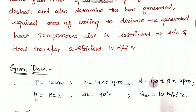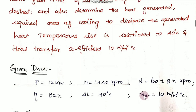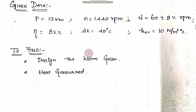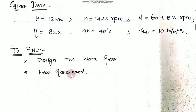The given data: efficiency is equal to 82%, delta temperature rise is equal to 40 degrees Celsius, and heat transfer coefficient is equal to 10 Watt per meter square degree Celsius. What we need to find: 1. Design the worm gear, and 2. Heat generated. We will use this data to proceed to the solution.